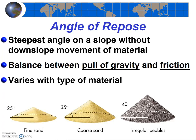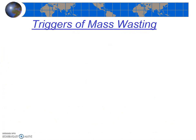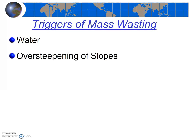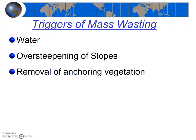For example, if a stream undercuts its banks too steeply, the banks will fall. Or, if a road cut is made too steeply, landslides result. Mass wasting events often, but not always, have triggers that initiate the event. Four common triggers of mass wasting that are important for you to know are: water, over-steepening of slopes (both natural and by humans), the removal of anchoring vegetation (again, both through natural and human-caused events), and earthquakes.